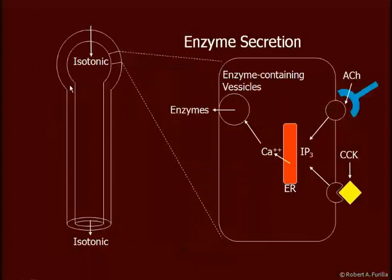These acinar cells are filled with granules — vesicles containing enzymes. The fluid enters the lumen as isotonic. These vesicles fuse with the membrane and release the enzymes.